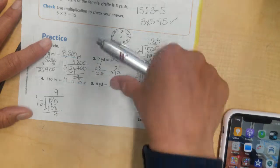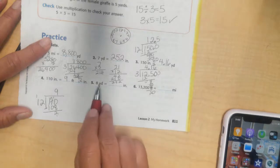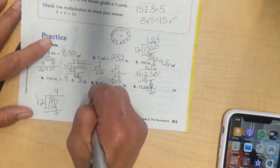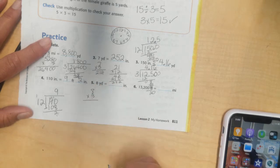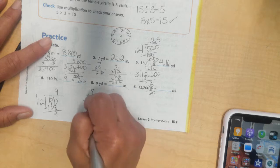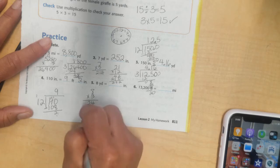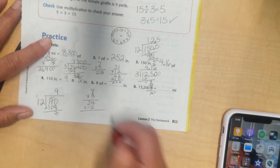8 yards is going to be how many inches. First I'll figure out feet. 8 times 3 is going to tell me how many feet I have. 8 times 3 is 24. I have 24 feet. And how many inches are in 24 feet? Well, I'll multiply by 12. Because there's 12 inches in 1 foot.